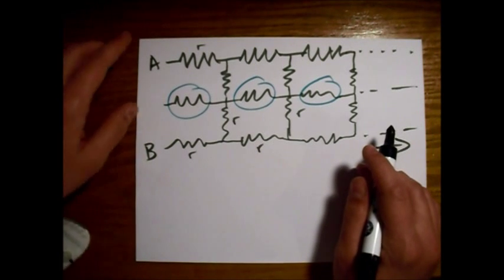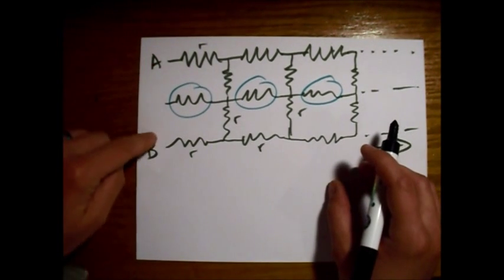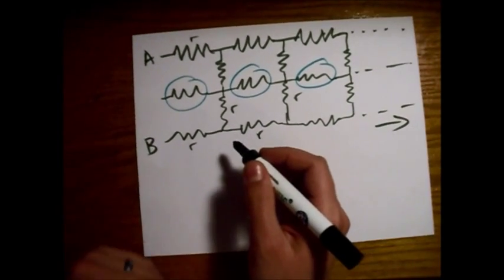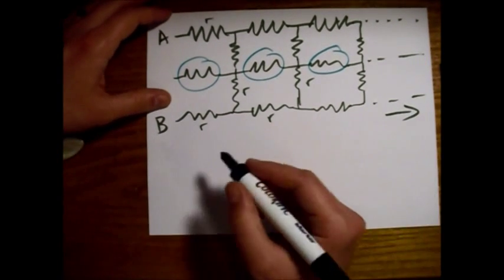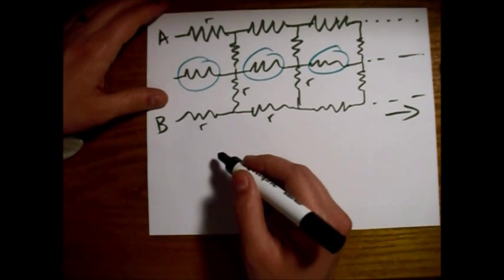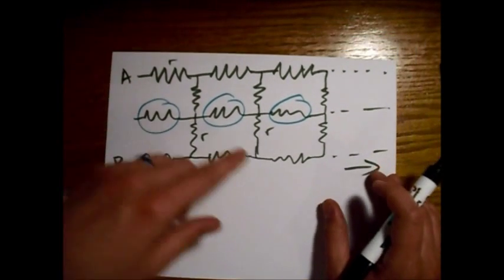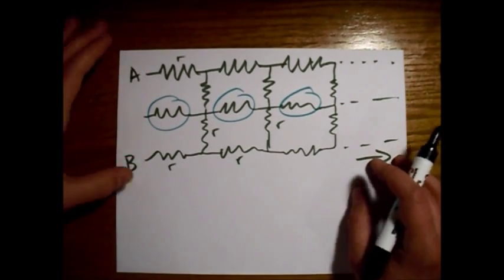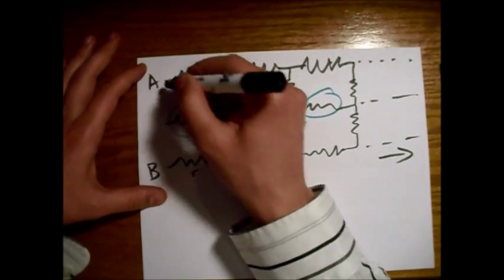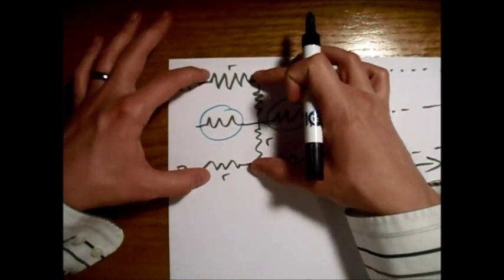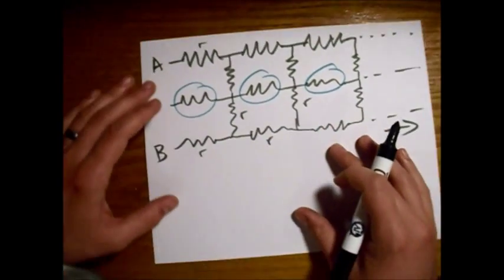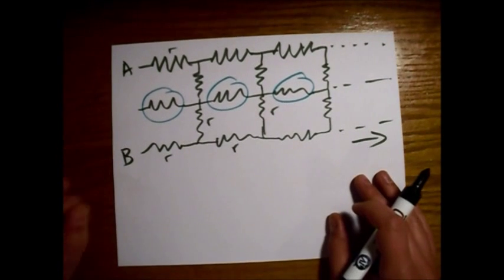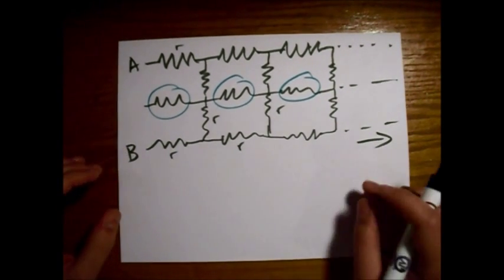We're going to try and measure the total resistance from A to B. Since this is an infinite chain of resistors, if we add another set of resistors on to the end, it won't make any difference, because this goes on infinitely already. And so that's what we're going to use to solve this problem.